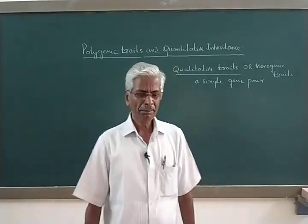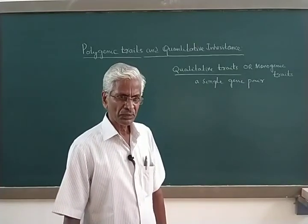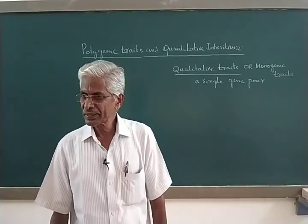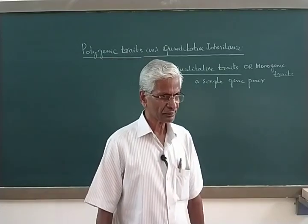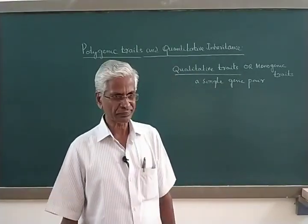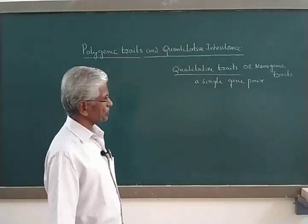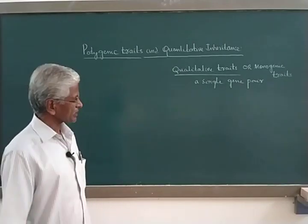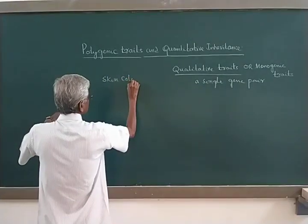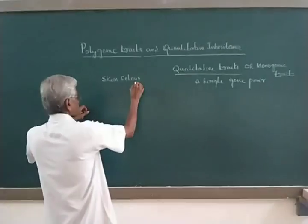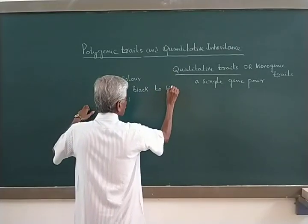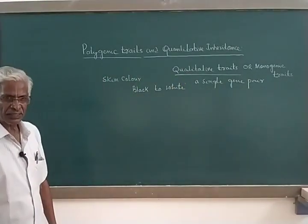However, there are several traits which show a continuous gradation — a continuous variation between two extremes. For example, in human skin color, it shows gradation from black to white with intermediate shades.